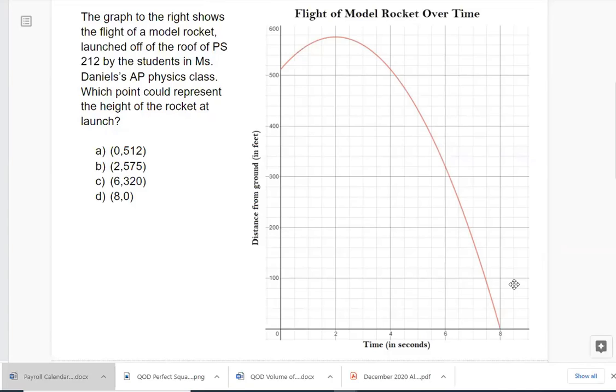First of all, the question. The question says, the graph to the right shows the flight of a model rocket launched off the roof of PS 212 by the students in Ms. Daniel's AP Physics class. Which point could represent the height of the rocket at launch? And in the example Crystal was looking at, she had to click somewhere on the graph to graph the point at launch, but I went ahead and used our coordinate pairs in the multiple choice there.